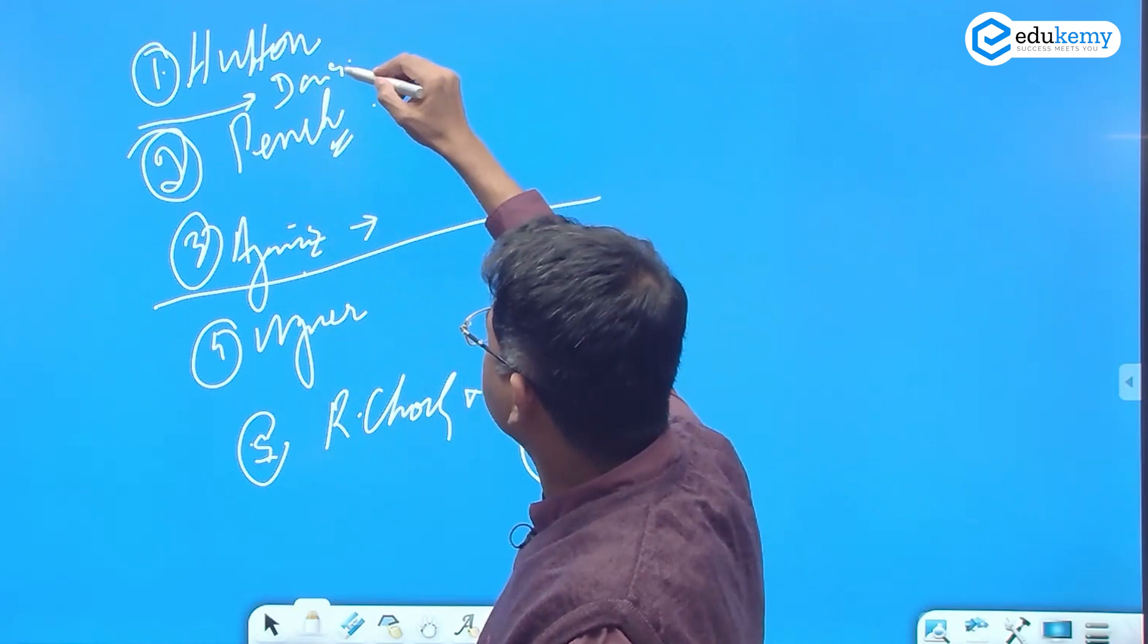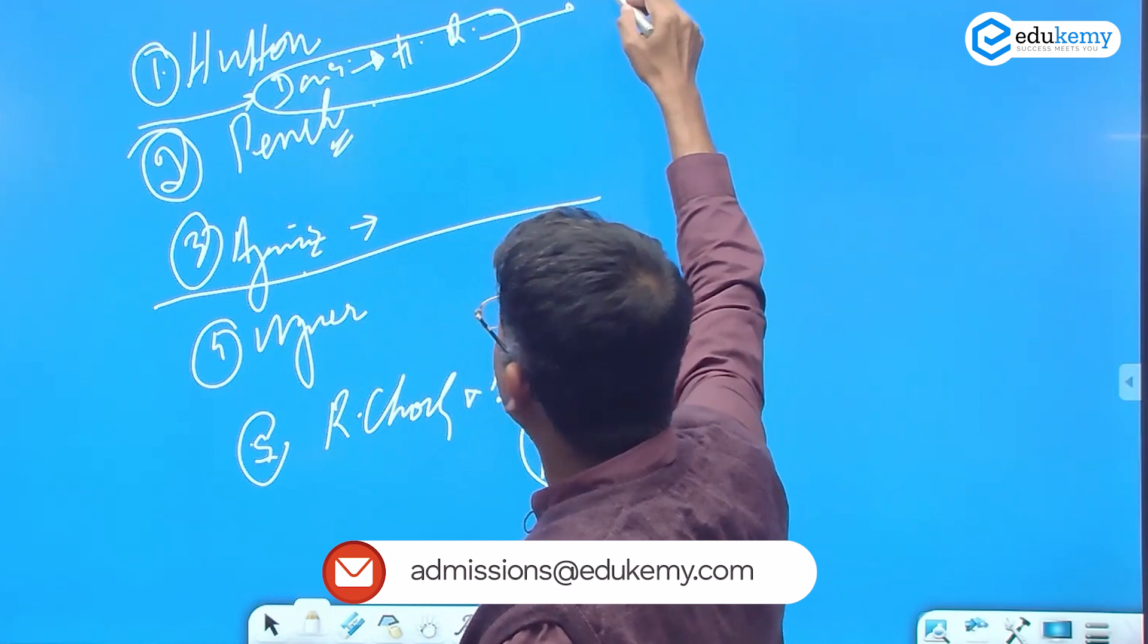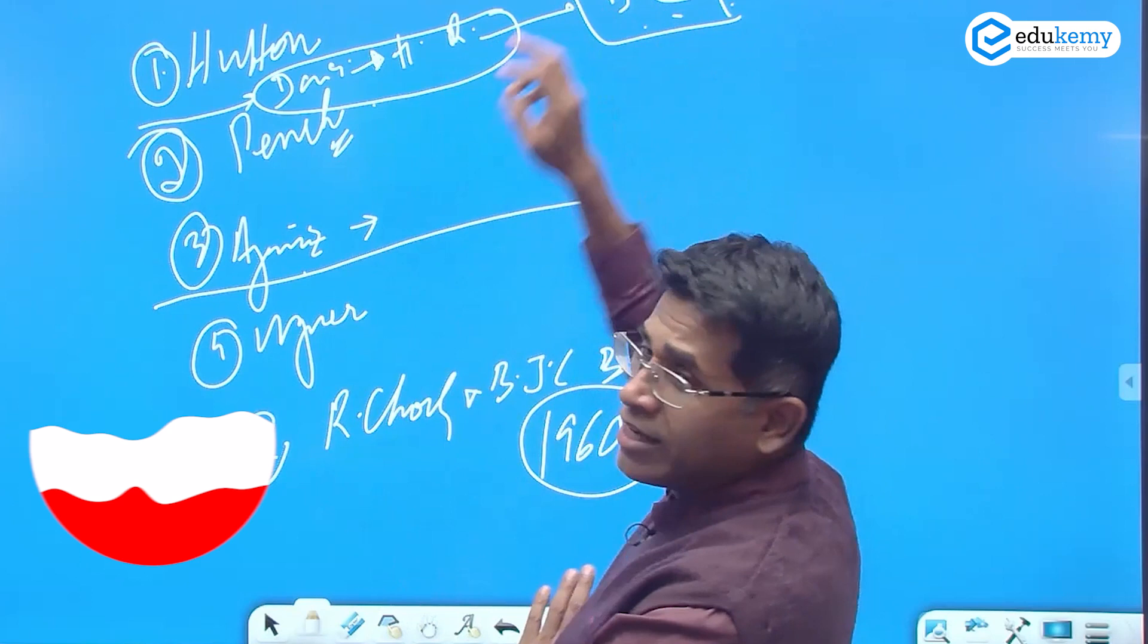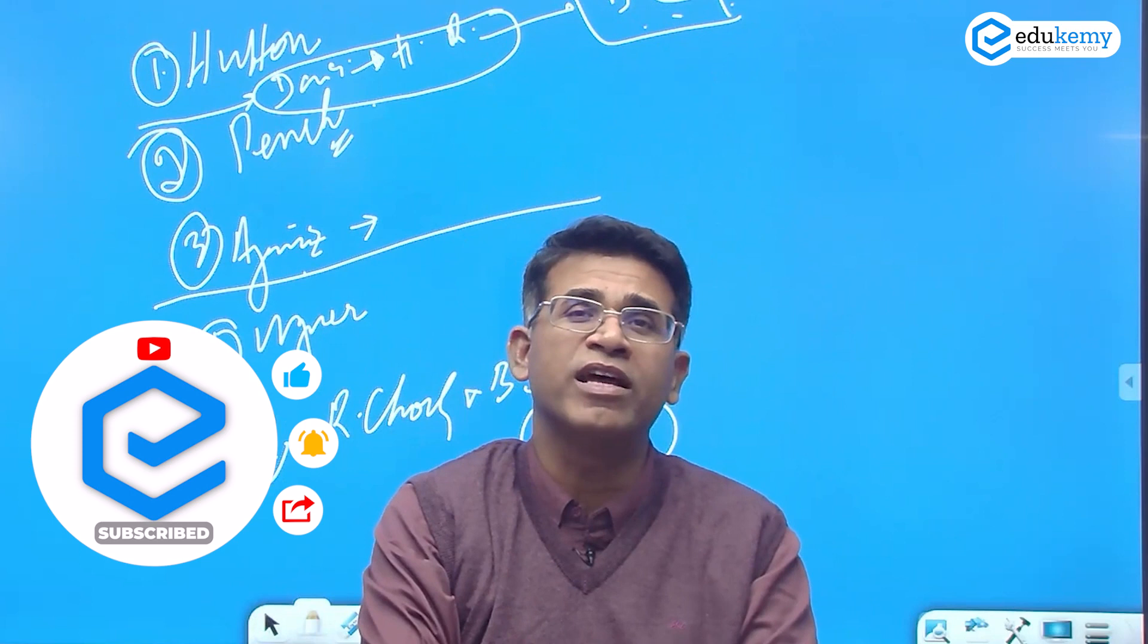This was based on the ideas of denudation chronology. This was a typical British contribution - no one name linked here, but denudation chronology is an English contribution. Arranging the landforms and rocks in terms of their geological age. Davis developed this into a model.